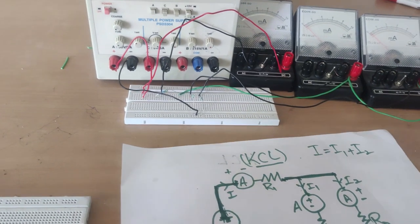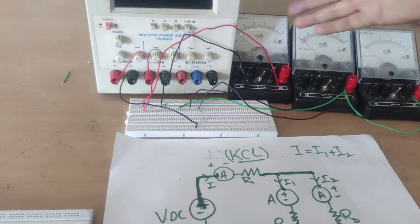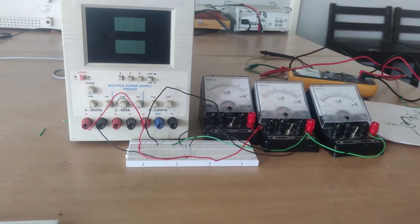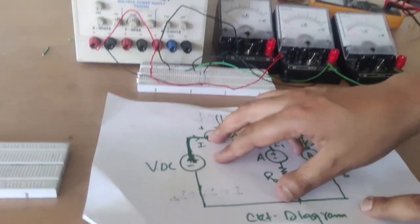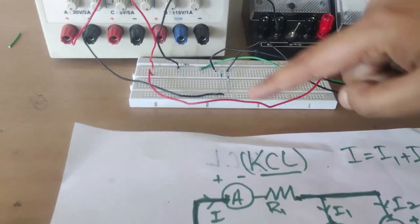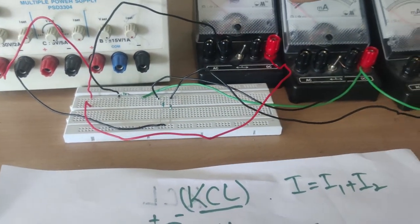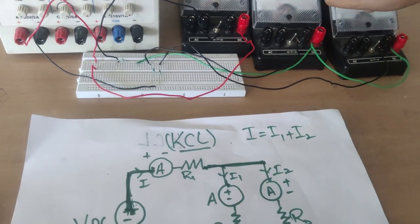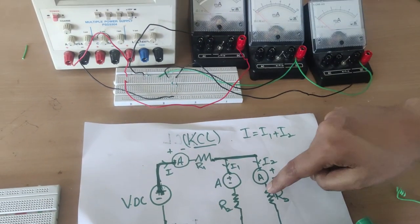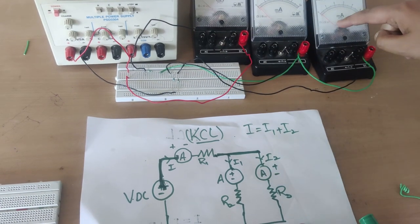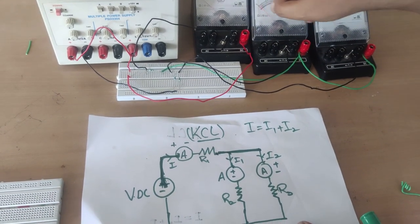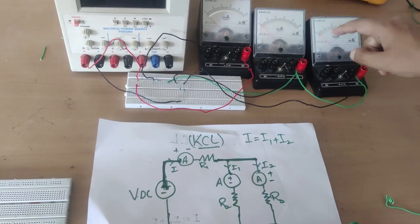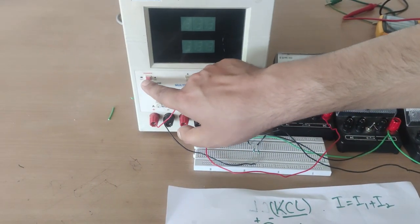I will switch on the supply and see whether current flows through the ammeters. The circuit is complete: voltage source, then resistance R1 in series with ammeter I, then ammeter I1 for R2, ammeter I2 for R3, and the total current I is measured in the series branch. Now I will switch on the supply.